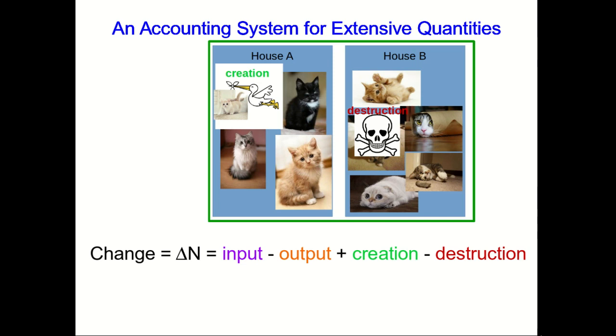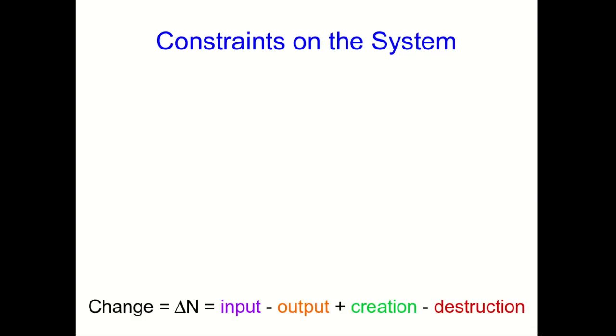And this basic idea of input, output, creation, and destruction applies to any extensive quantity. Sometimes there are reasons to suspect that there are constraints on how changes happen in a system, and this can further simplify the accounting.